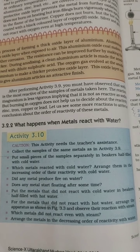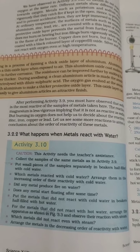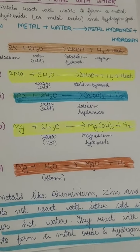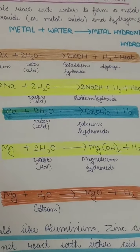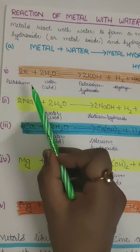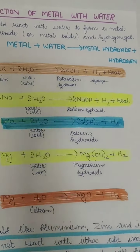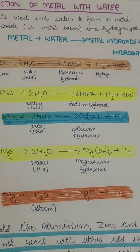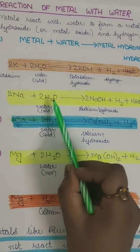For metals that do not react with hot water: calcium reacts with cold water, but aluminium and magnesium do not react with cold water. Magnesium reacts with hot water. Aluminium, zinc and iron do not react with cold or hot water — they react with steam. Here are the reactions you have to learn: potassium plus water gives potassium hydroxide, hydrogen and heat. Whenever metals react with water, they produce metal hydroxide and hydrogen gas is released.